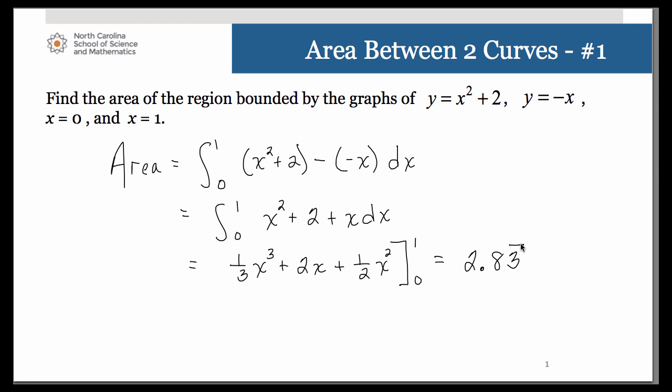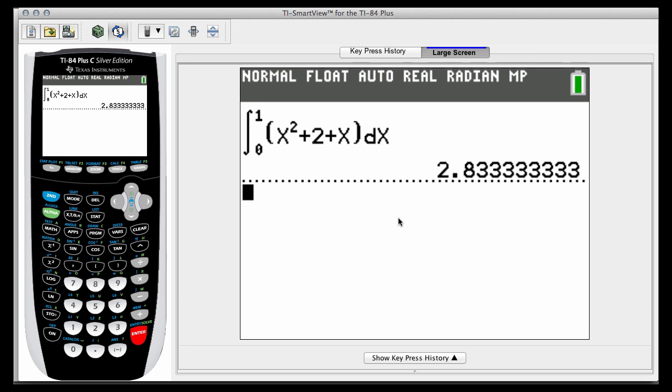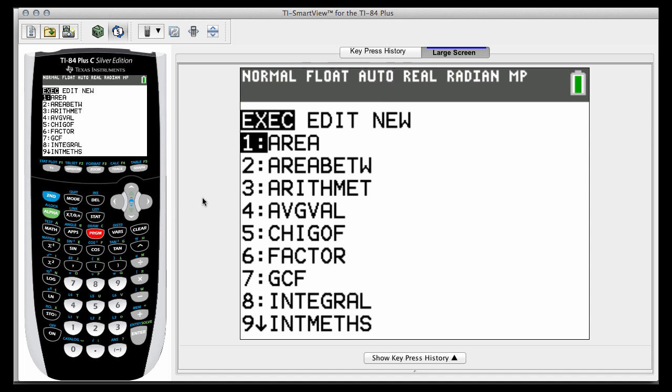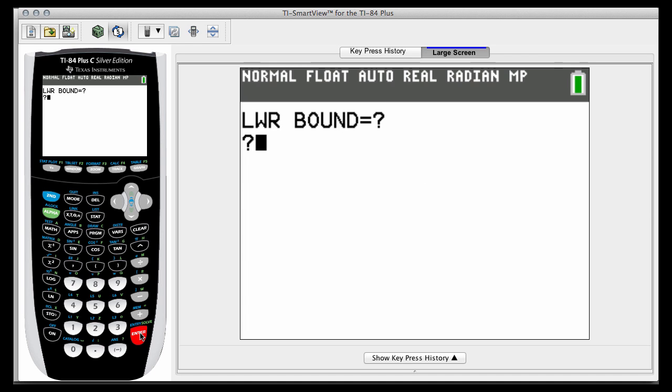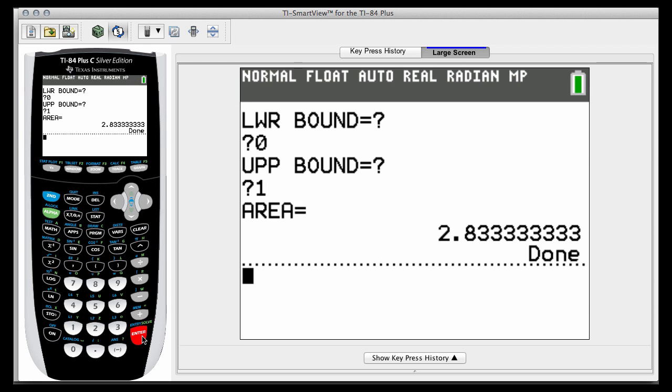Let me show you how to work that area between program that you have on your graphing calculator. From your quit screen, if you bring up your program listing, you probably don't have all the programs I do, that's okay, but yours should be alphabetized as mine are. Go down to area between. When you go ahead and run it, it's going to ask you what your lower bound is. In this case it's 0, upper bound would be 1, and there's your answer.